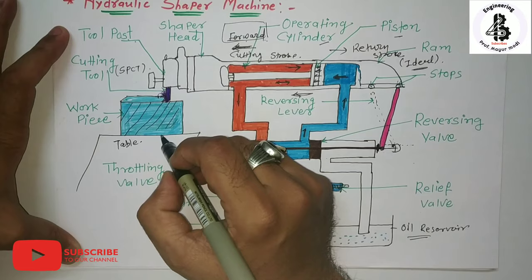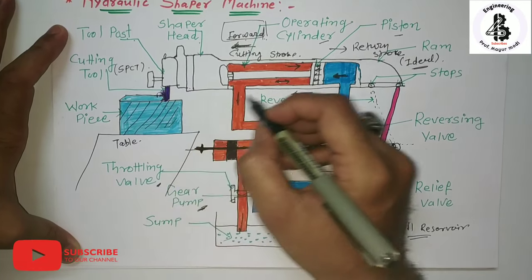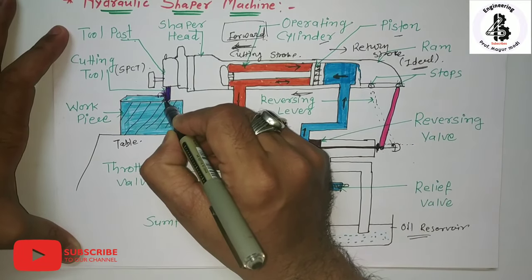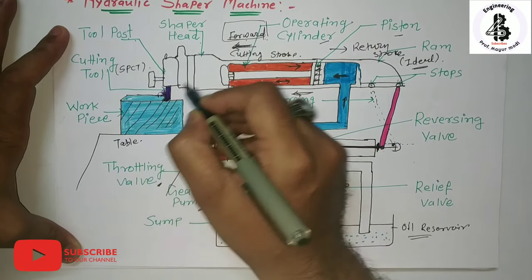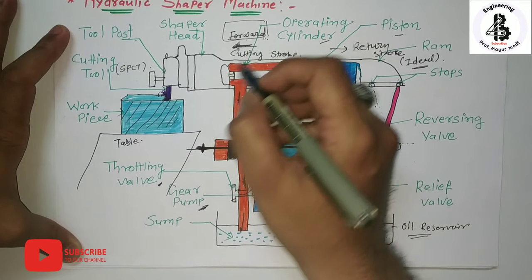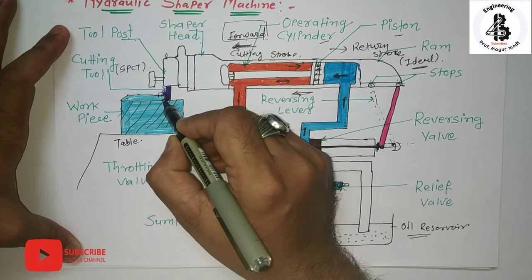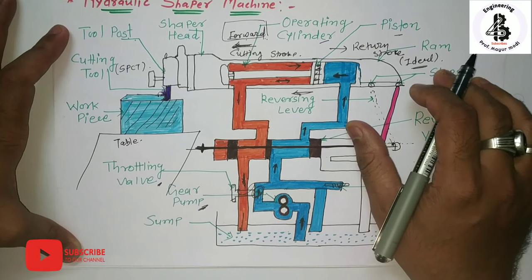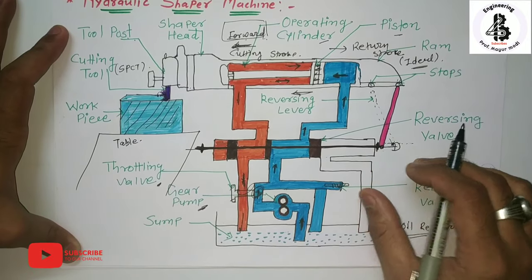The table supports the work piece material, which rests on the table or is fixed with the help of a vice. By the reciprocating motion of the ram, the tip of the tool contacts the surface and removes metal in the forward direction, producing flat surfaces on the work piece. This covers the hydraulic shaper machine. If you liked this video, please subscribe and share Mechanical Magic Mechanical Learning Tutorials. Thank you very much.